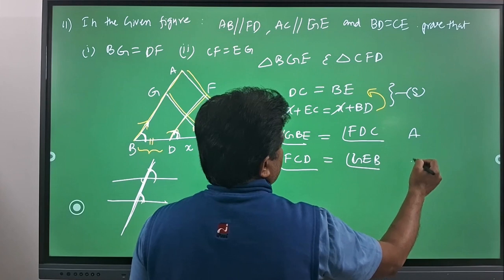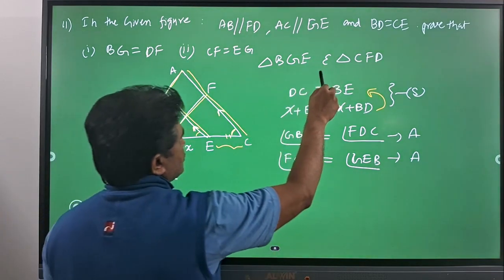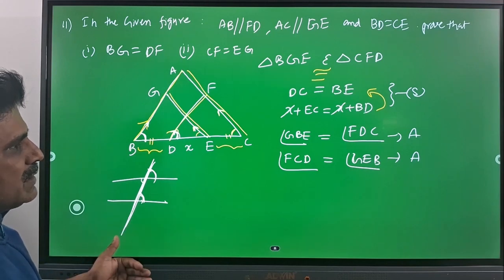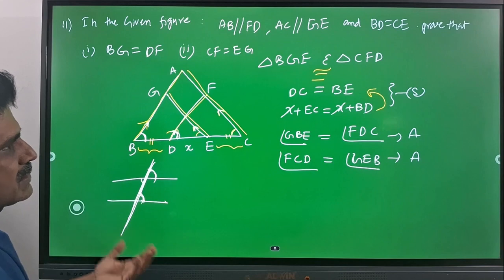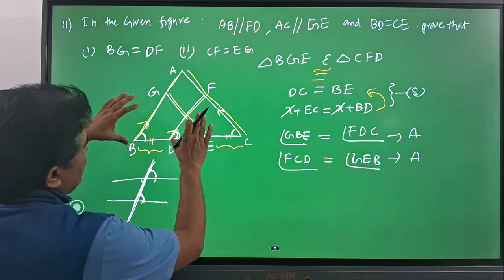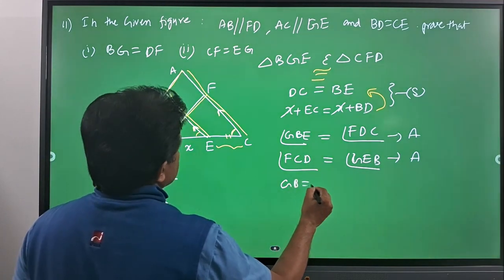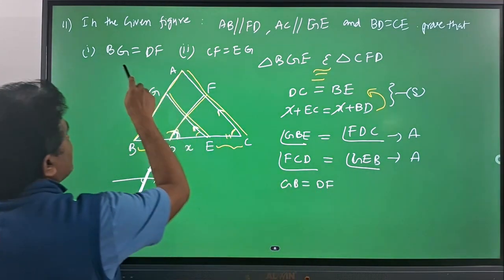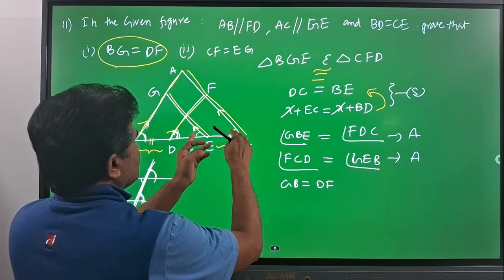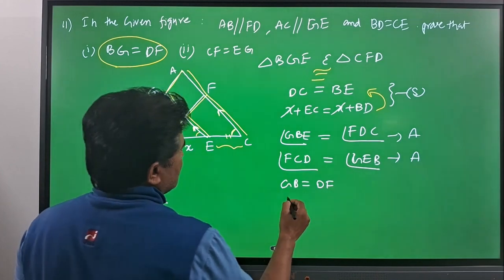We now have side, angle, and angle equalities for the given triangles, so we can say that these two triangles are congruent. When two triangles are congruent, their respective sides and angles are also equal. Comparing the respective sides: since the two angles are equal, the adjacent sides BZ equals DF — which is the first condition we need to prove. For the second condition, looking at angles E and C, their respective adjacent sides FC and GE are equal.